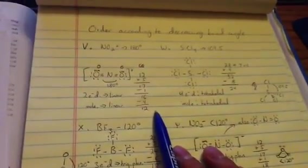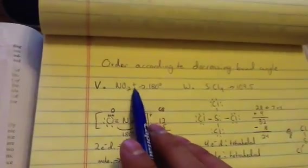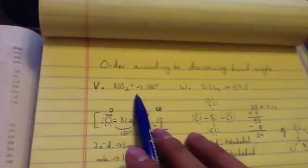Don't be tripped out. The first one, let's see. This is V. We have NO2+. So in this case, I found out it was 180 degrees. But you start off with the Lewis structure.